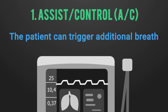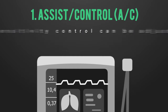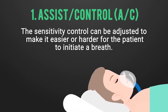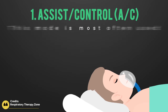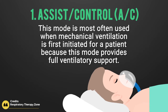Both adjustments — slope and flow — define the duration of the pressure increase from the lower to the higher pressure level. With a slope adjustment, the time is set in seconds. With a flow adjustment, the gas flow is set in liters per minute. This setting directly affects the flow and thus the supplied tidal volume.